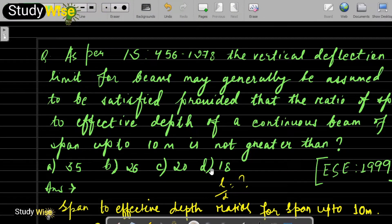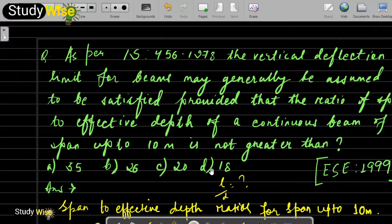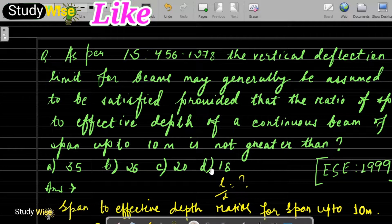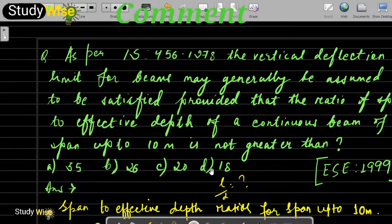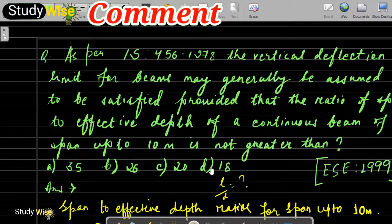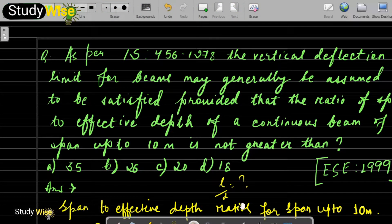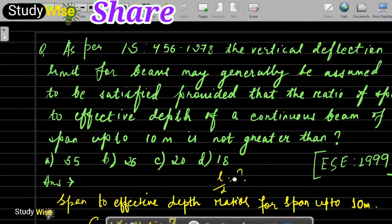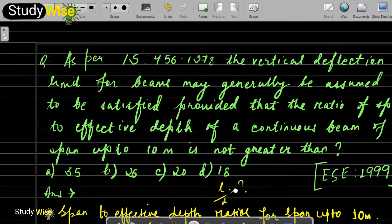As per IS-456-1978, the vertical deflection limit for beams may generally be assumed to be satisfied provided that the ratio of span to effective depth of a continuous beam of span up to 10m is not greater than: option A 35, option B 26, option C 20, option D 18.